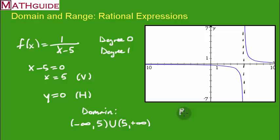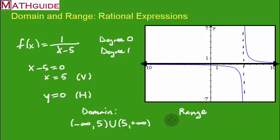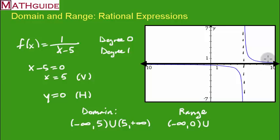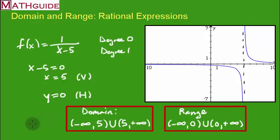Now let's get the range — those are the y values. The bottom branch goes from negative infinity up toward 0, getting closer to the x-axis but never touching it. The top branch comes from near 0 and heads toward positive infinity. We unite those two intervals to express the complete range.